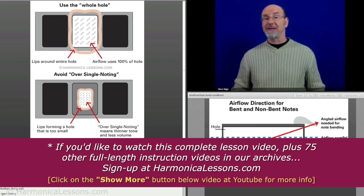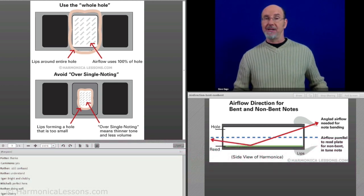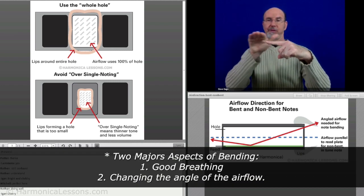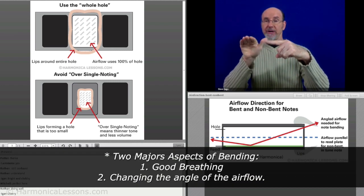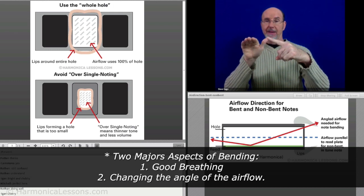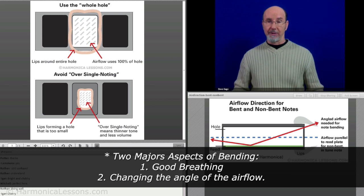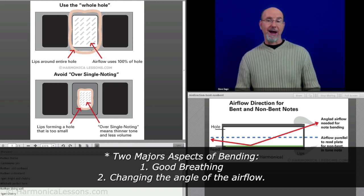That's what bending does is changing the angle of airflow. So we want the airflow to go parallel. Here's the reed vibrating inside the harmonica, let's say that's four blow or four draw. We want the airflow to be parallel to it. So this brings us back, you see the little graphic below me.